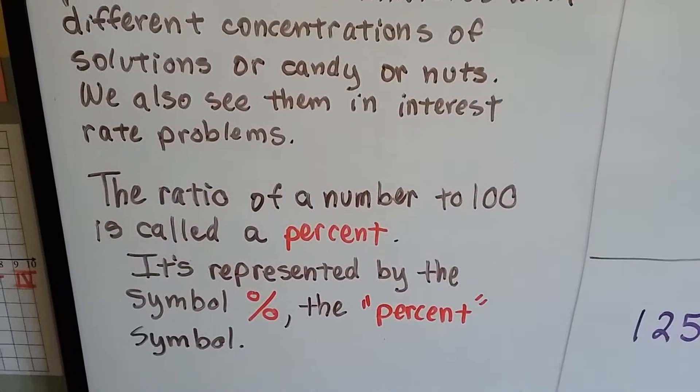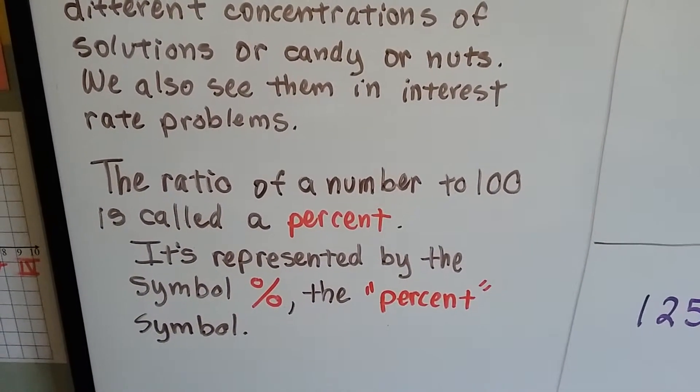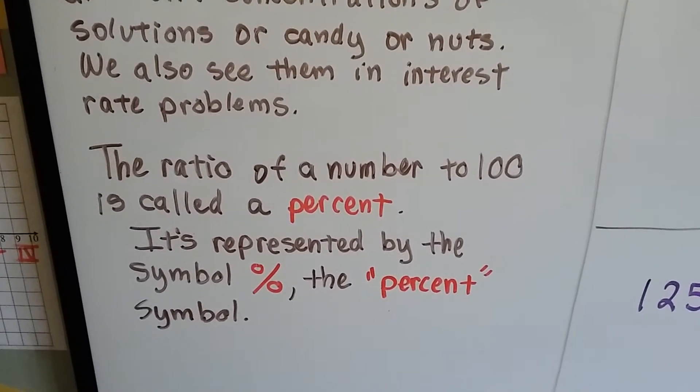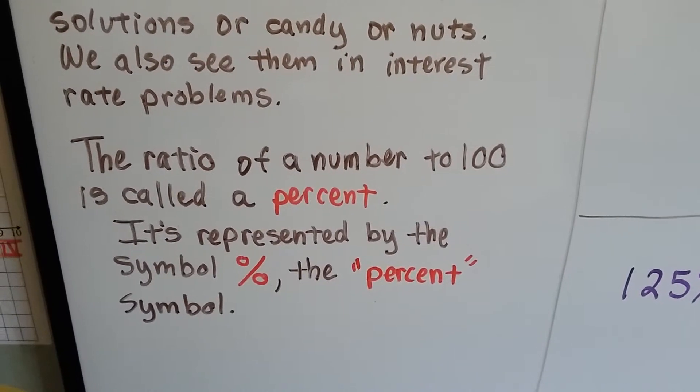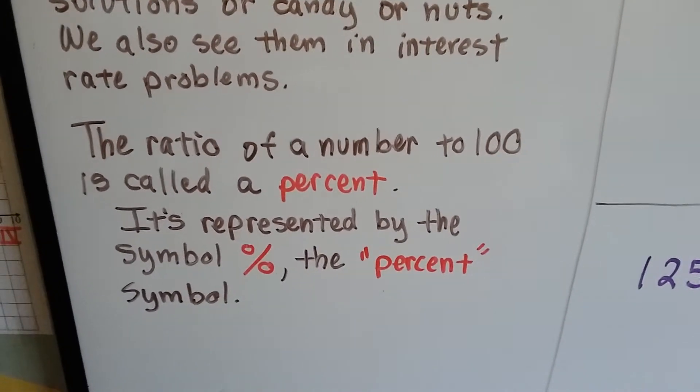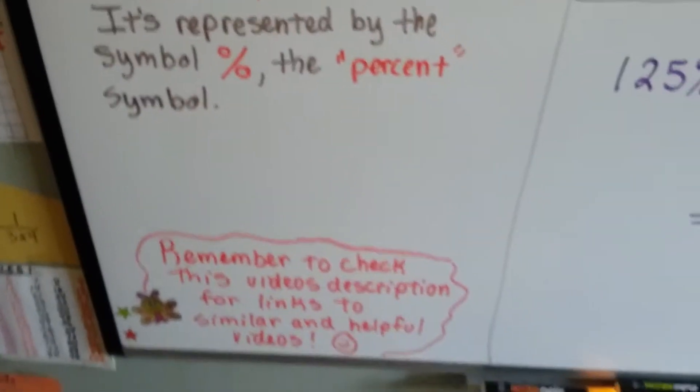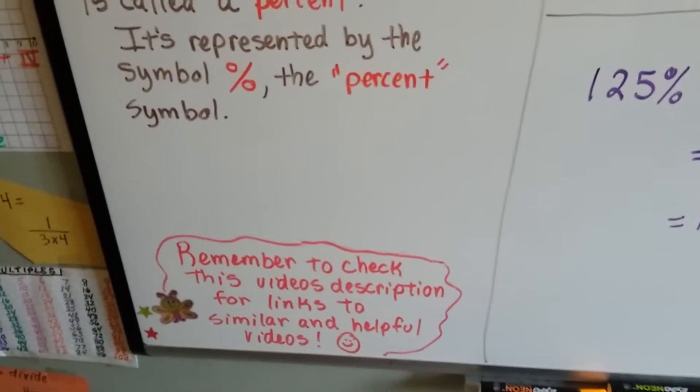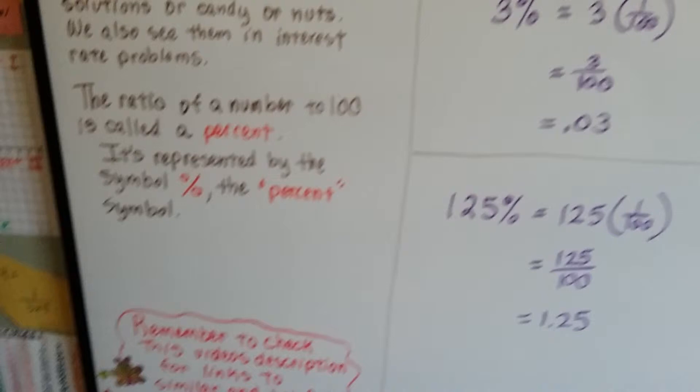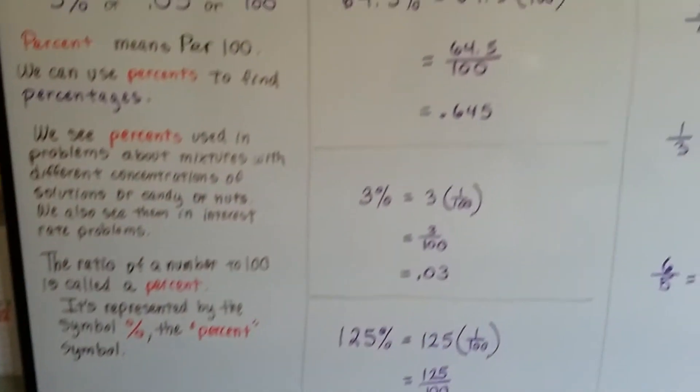The ratio of a number to 100 is called a percent. It's represented by that symbol, the zero, the little tiny zero with a slash with a little zero underneath it, and that's called the percent symbol. Don't forget that there's links to helpful videos in the description of this video. I have an entire playlist on algebraic word problems that can help you.